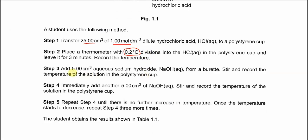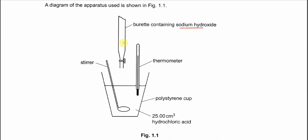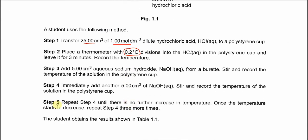Step 3: add 5 cm³ of aqueous sodium hydroxide from the burette, stir and record the temperature. So after we put 5 cm³ into the solution we measure the temperature, then add another 5 cm³ and repeat until it reaches the maximum temperature. The last step is to repeat until no further increase in temperature, then once the temperature decreases, repeat step 4 for 3 more times.